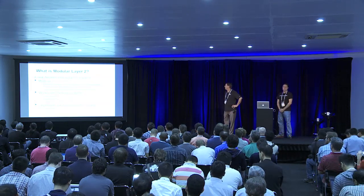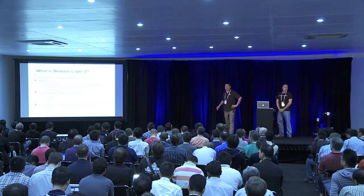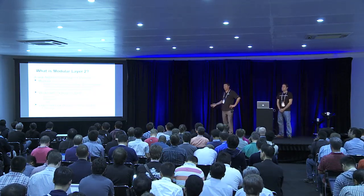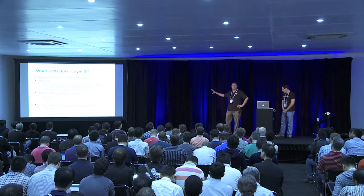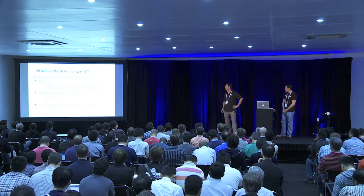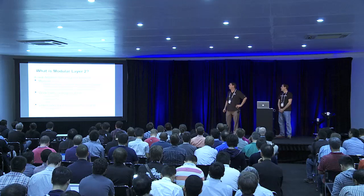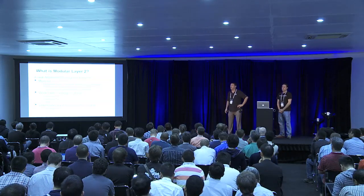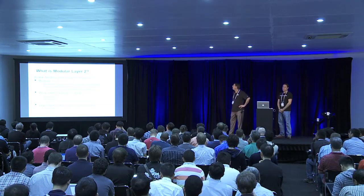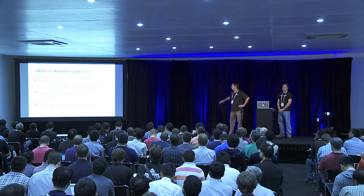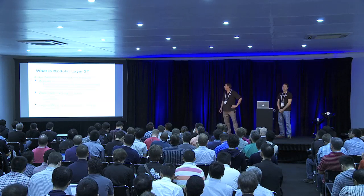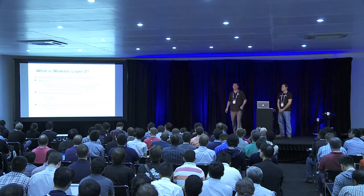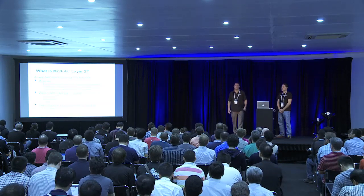The modular Layer 2 plug-in is replacing those existing plug-ins that are being deprecated. However, their agents are not being deprecated — this is really just the plug-in side. The OpenVSwitch, LinuxBridge, and Hyper-V agents are all supported by this plug-in and will continue to evolve. ML2 will support new features in them. The existing monolithic plug-ins are being deprecated; Hyper-V is up to its maintainers to decide if and when to deprecate.